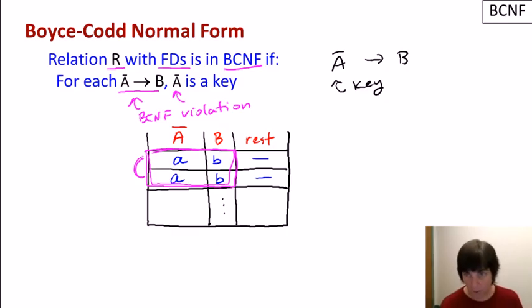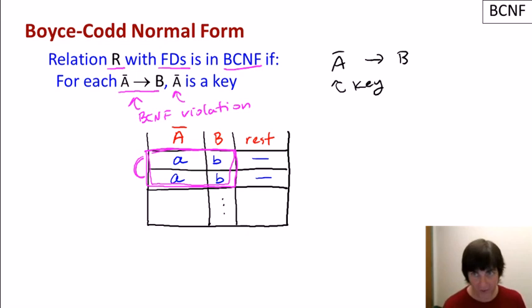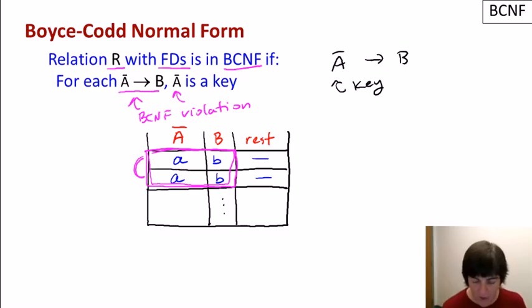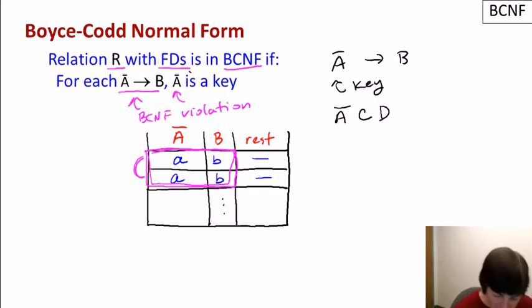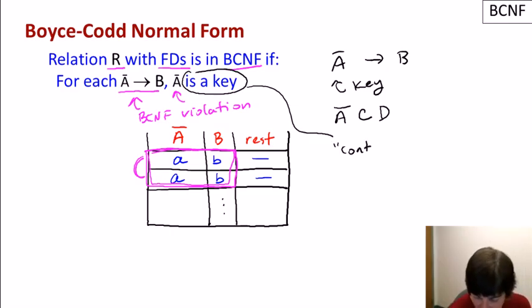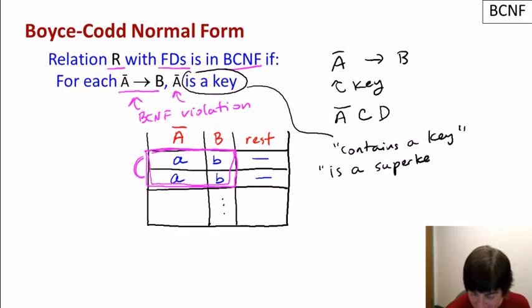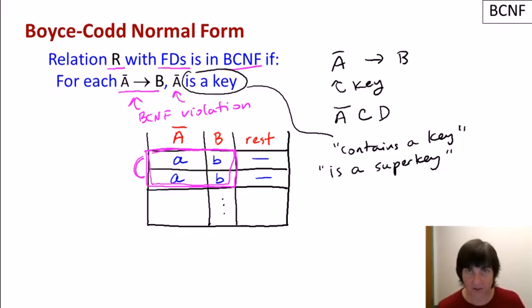To clarify: the left-hand side doesn't need to be declared as the primary key, only that it is in fact a key — meaning it determines all other attributes, or equivalently, is never duplicated across tuples. Any superset of a key is also a key. So you may see BCNF defined as requiring the left-hand side to contain a key, or to be a superkey — a key or superset of a key. All of these formulations say exactly the same thing.